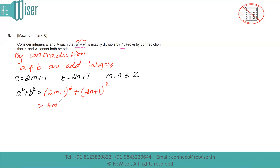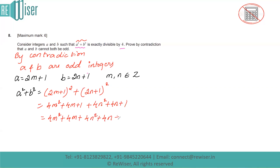Expanding (2m + 1)² gives 4m² + 4m + 1, and expanding (2n + 1)² gives 4n² + 4n + 1. Adding these together gives 4m² + 4m + 4n² + 4n + 2. Taking 4 as a common factor gives 4(m² + m + n² + n) + 2.